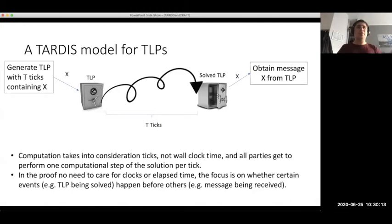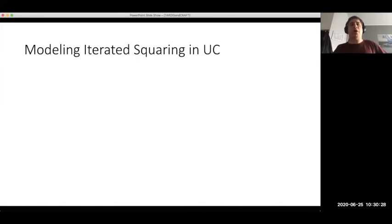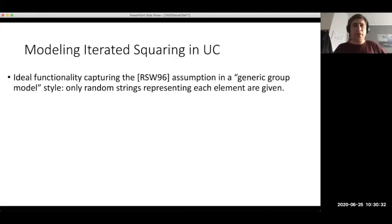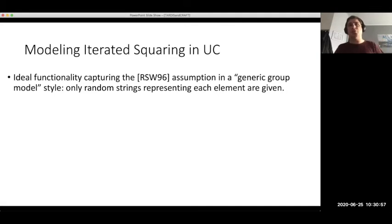However, the abstract tick model alone does not solve the problem where the environment tries to brute-force a time-lock puzzle using several parallel sessions. To address that, we need a better modeling of the iterated squaring assumption in the UC framework. We do this by capturing this assumption into a generic group model-style functionality that allows parties to perform squaring or multiplication operations over group elements, but they never receive an actual group element — only a generic string as a handle.